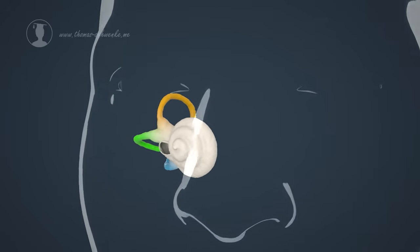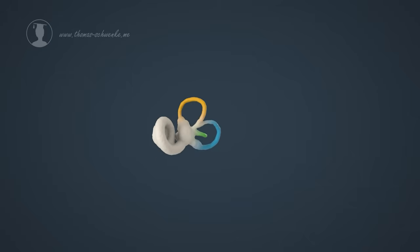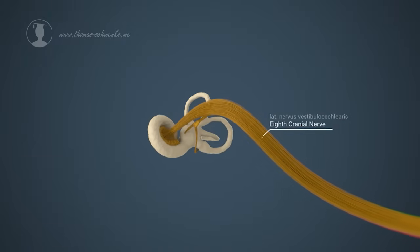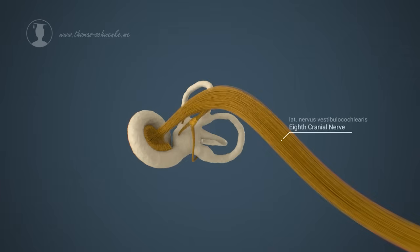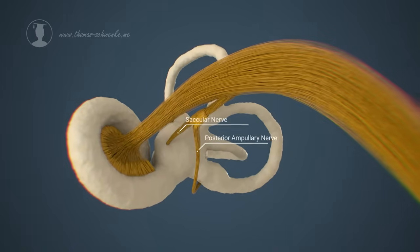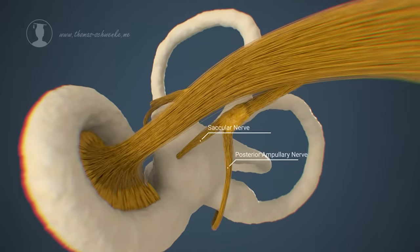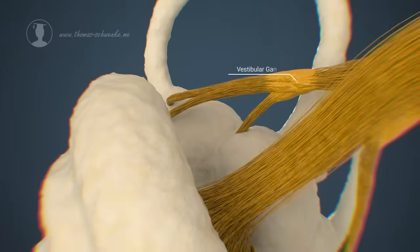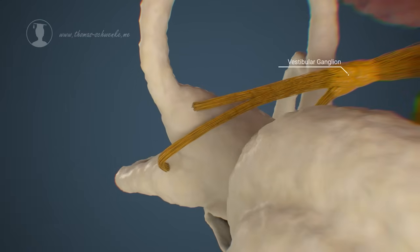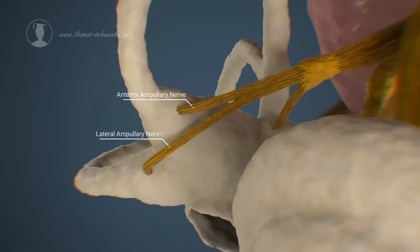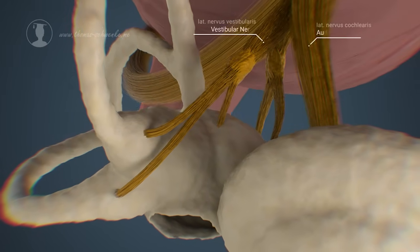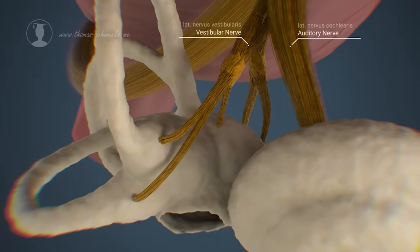Both the hair cells of the cochlea and the hair cells of the vestibular system send action potentials to our brain via the eighth cranial nerve, also known as the vestibulocochlear nerve. The utricle, saccule, and each of the three ampullae have their own nerve tracts, the cell bodies of which are called ganglions. The vestibular nerve then forms the vestibulocochlear nerve with the cochlear nerve.